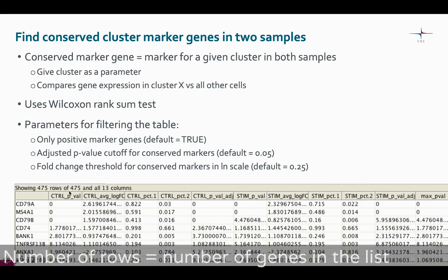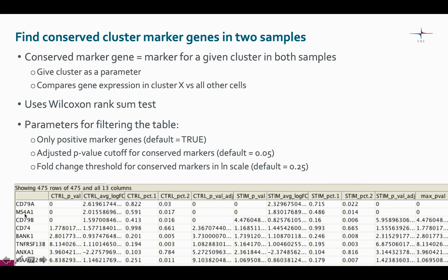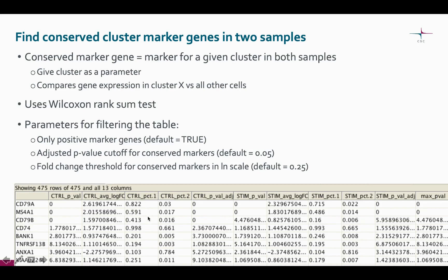Up here we can see how many genes are in the list. Here we can see the gene names, and here are the p-values and the fold changes. Please note that the fold change is in the natural logarithmic scale, ln. These values here are percentages of cells expressing the marker — this one means the percentage in the cluster in question.